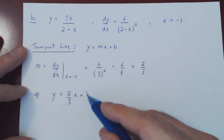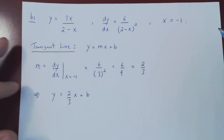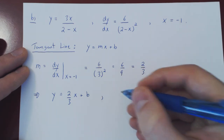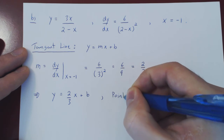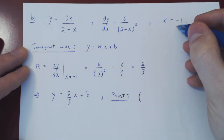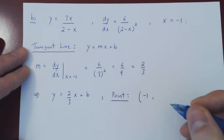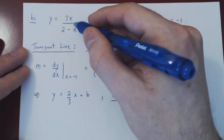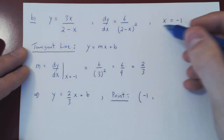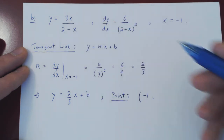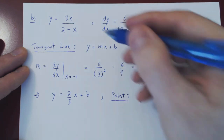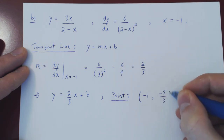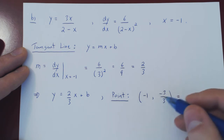We need an equation that will allow us to solve for b. The tangent line touches the curve at the given point of interest. So what is our point here? We already have the x value — it is negative 1. We need a y value, the y value of our function at negative 1. So replace in our expression for y as a function of x, x by negative 1: we get 3 times negative 1, which is negative 3, over 2 minus negative 1, which is 2 plus 1, which is 3. So we end up with a very simple point being negative 1, negative 1 — purely coincidental here.